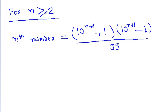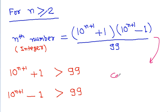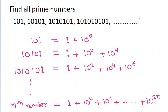For n greater than or equal to 2, the term 10 to the power n+1 will be greater than 99, and 10 to the power n+1 minus 1 is also greater than 99. So the nth number has non-trivial factors and cannot be a prime number. Therefore, 101 is the only prime number in this sequence.